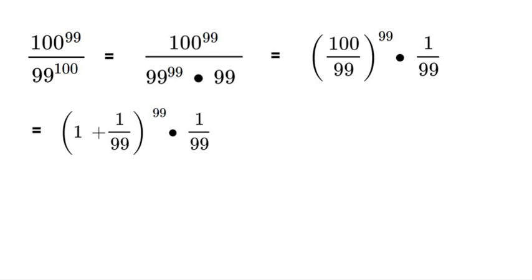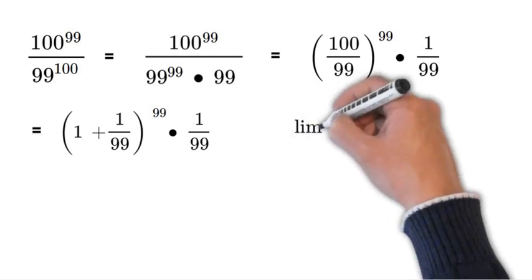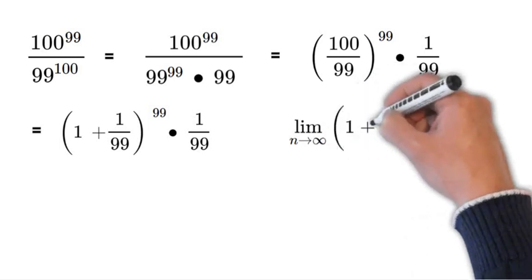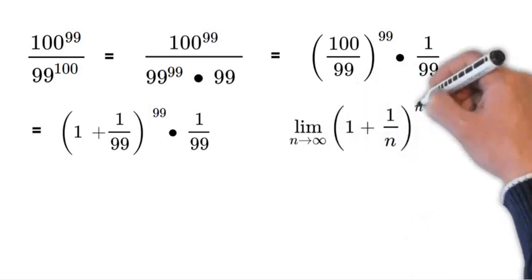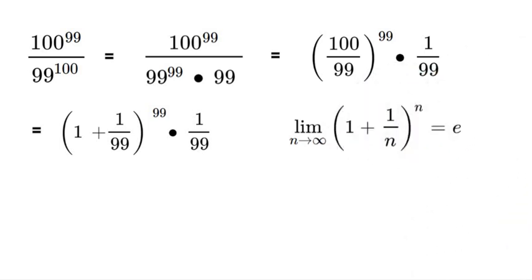Now this is where memorizing a certain formula or limit is very important. So let's go ahead and write that out. The limit as n approaches infinity of 1 plus 1 over n to the power of n is equal to e.